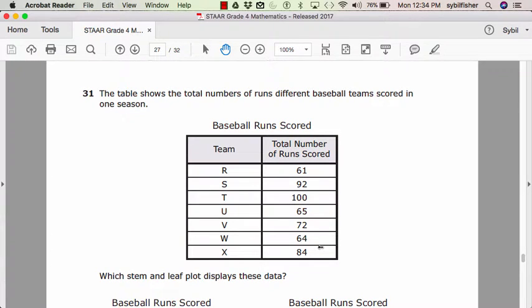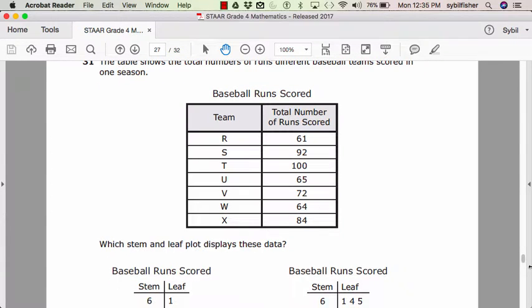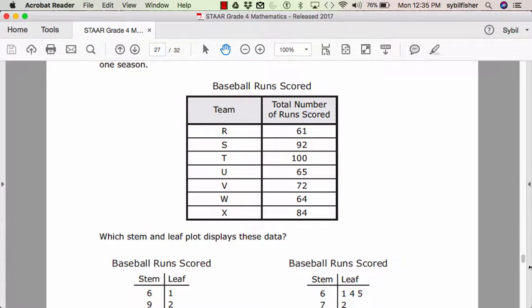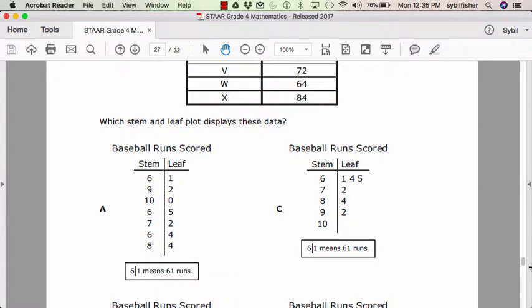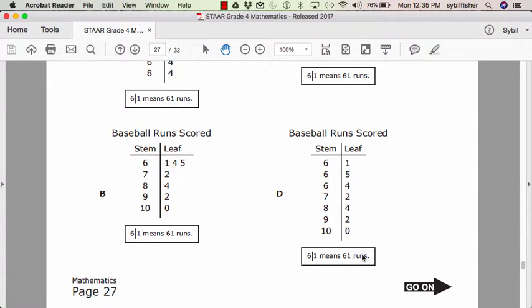Number 31. The table shows the number of runs different baseball teams scored in one season. Baseball runs scored. Team R, S, T, U, V, W, X. Total runs scored. Which stem and leaf plot displays these data? Baseball runs scored. 6 and 1 means 61 runs. Those are the same on all of them.